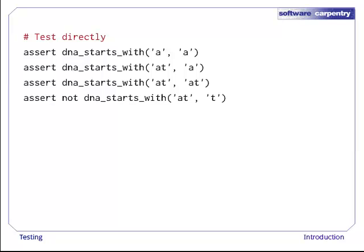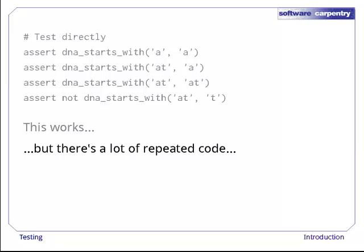Let's start by testing our code directly using assert. Here, we call the function four times with different arguments, checking that the right value is returned each time. This is much better than nothing, but it has several shortcomings. First, there's a lot of repeated code.